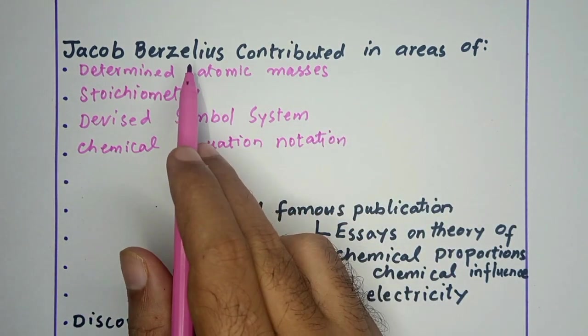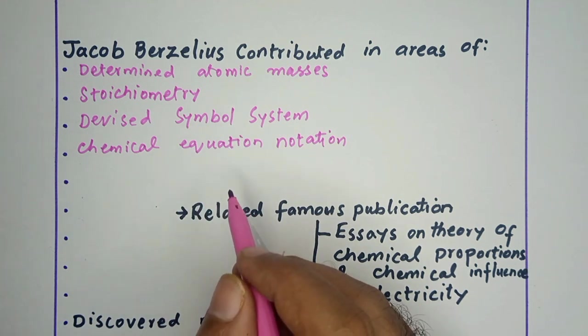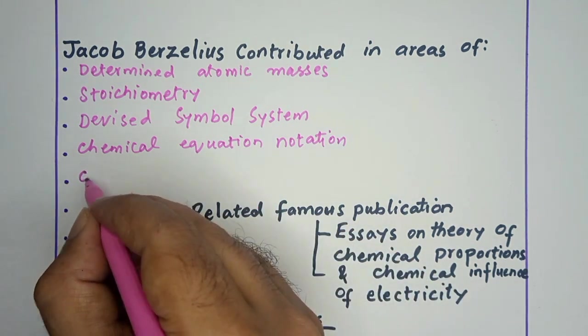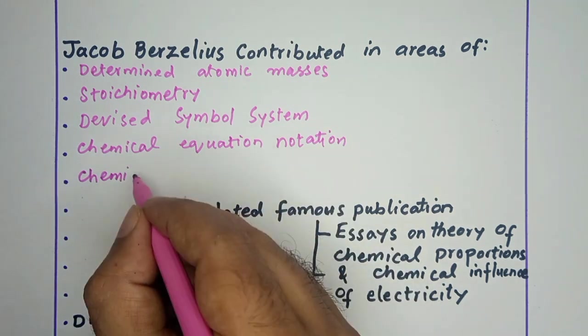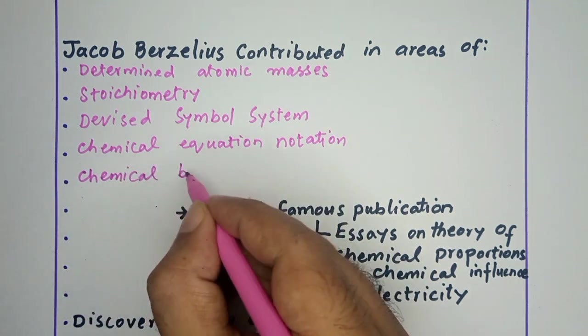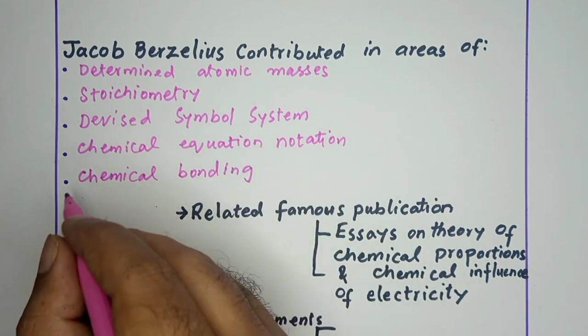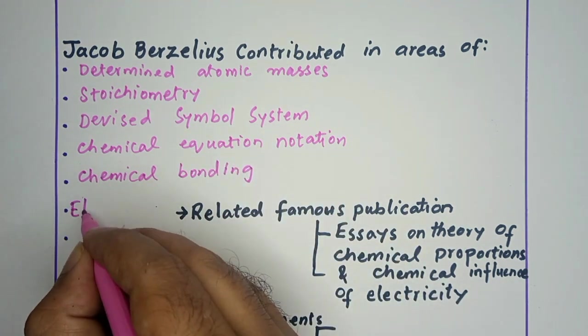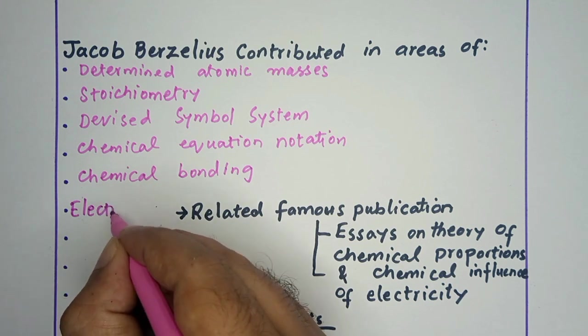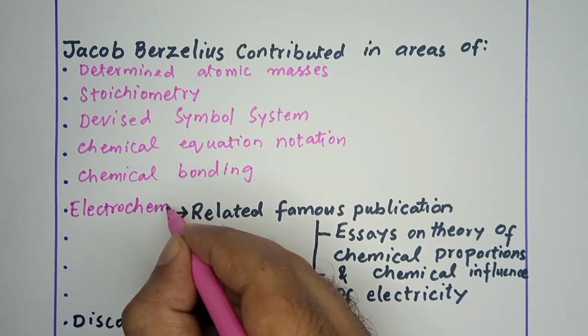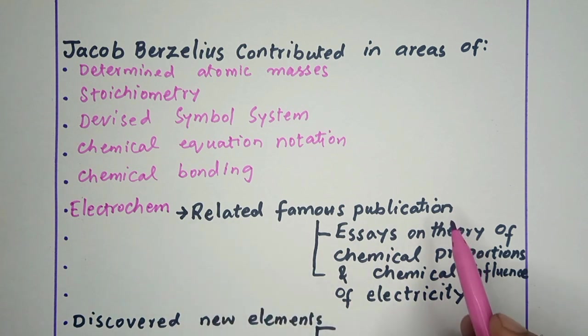Jacob Berzelius has researched on chemical bonding. Jacob Berzelius has extensively researched on electrochemistry. In electrochemistry, he published famous publications including Essays on Theory of Chemical Proportions and Chemical Influence of Electricity.